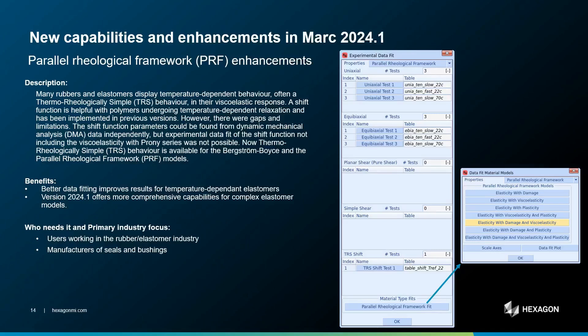The next enhancement I would like to discuss is about temperature dependencies for elastomers or rubbers. A specific type of temperature-dependent behavior known as thermorheologically simple, or TRS, behavior is often observed in rubbers or other elastomers. This type of behavior was already available in MARC, but only for viscoelasticity models based on the Prony series. In previous versions, the experimental data fitting capabilities for the Parallel Rheological Framework, PRF, models did not support temperature dependency. With this new release, you will be able to define a TRS behavior for the best viscoelastic and the PRF models, and include TRS behavior in the viscoelastic material during experimental data fitting, leveraging the PRF models.